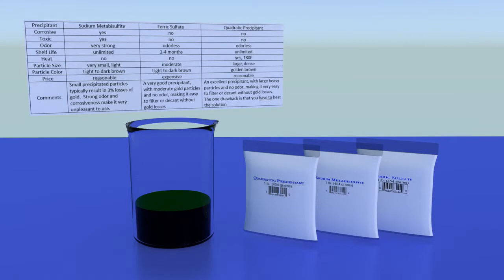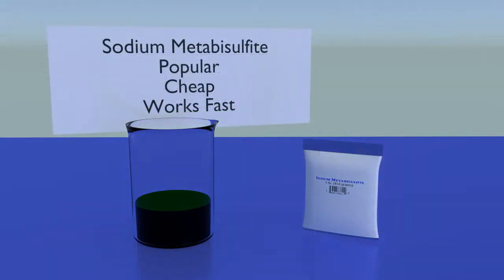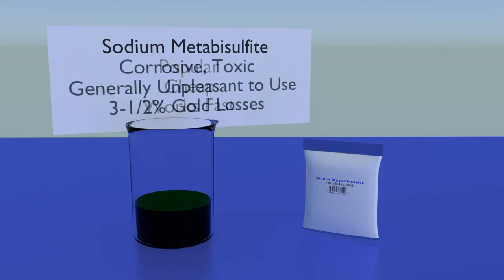Precipitating gold: there are several different selective precipitants available. If used correctly, all will precipitate gold with a purity of at least 99.95 percent. Sodium metabisulfite is the most commonly used precipitant. It's inexpensive and works quickly. On the negative side, it's corrosive, toxic, and generally very unpleasant to use. It precipitates very tiny particles of gold, some nano in size. Consequently, some of those gold particles, about three and one half percent, pass through filter paper and are lost.